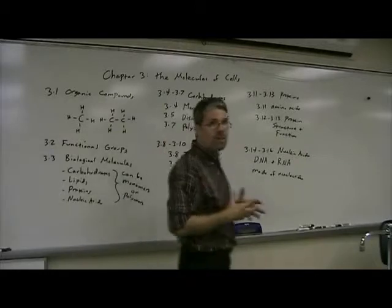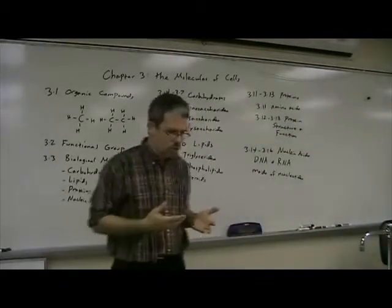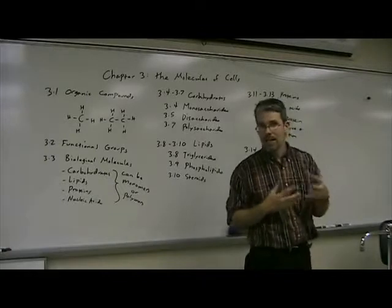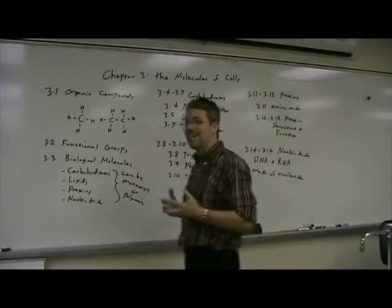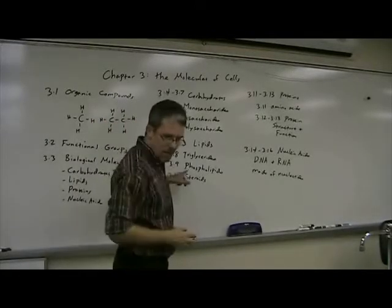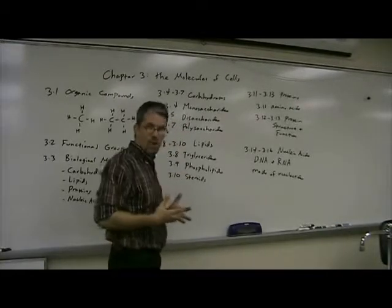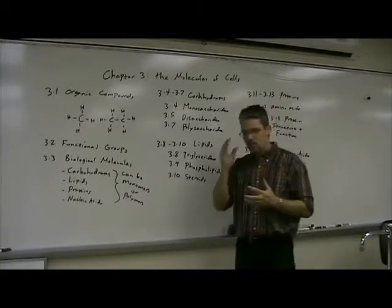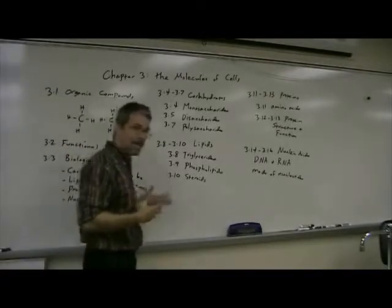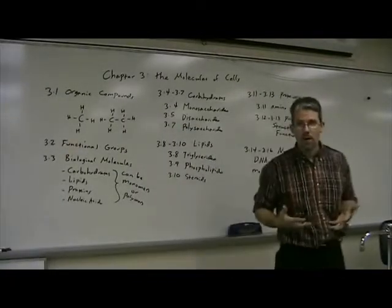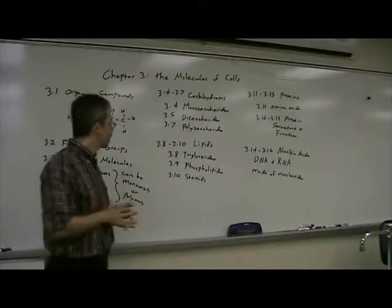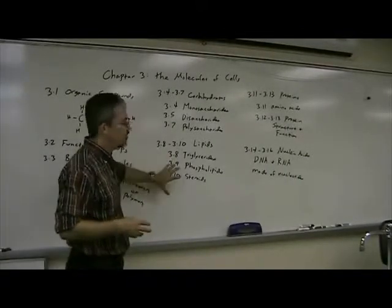Cell membranes are made of a double layer of phospholipids. With the phospholipid molecule, half the molecule is hydrophilic — meaning it can mix with water — and the other half is hydrophobic. So when placed in water, they naturally form a membrane. Steroids, also covered in sections 9 and 10, aren't made of fatty acids; they are made of fused carbon rings, and are also known as sterols. Examples of steroids include cholesterol, vitamin D, anabolic steroids, sex hormones, and hormones secreted by the adrenal cortex such as cortisol. Those are some examples of lipids and their various purposes.